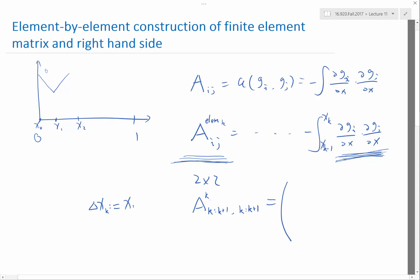Let's say delta x_k we define it as x_k plus 1 minus x_k. Then this small matrix is just 1 over, actually minus 1 over delta x_k, minus 1 over delta x_k, 1 over delta x_k and 1 over delta x_k. So this is the matrix we need to construct per element.